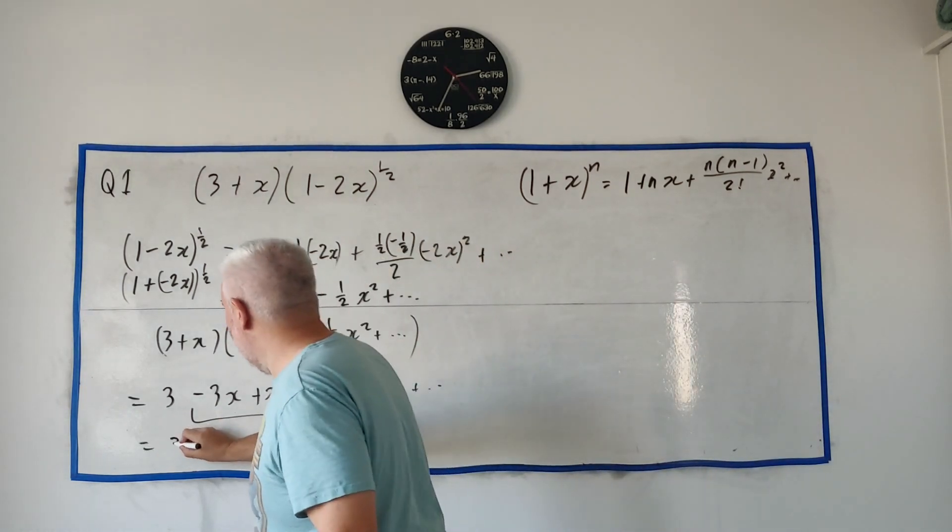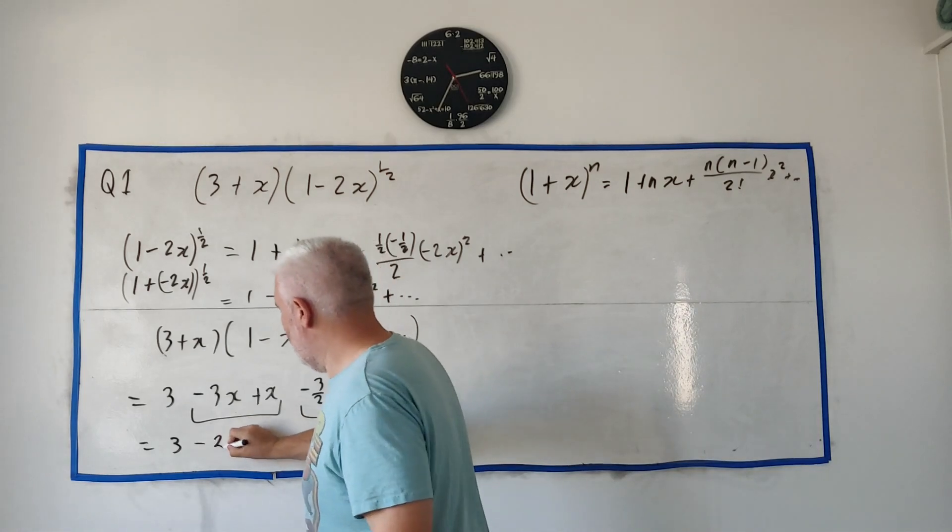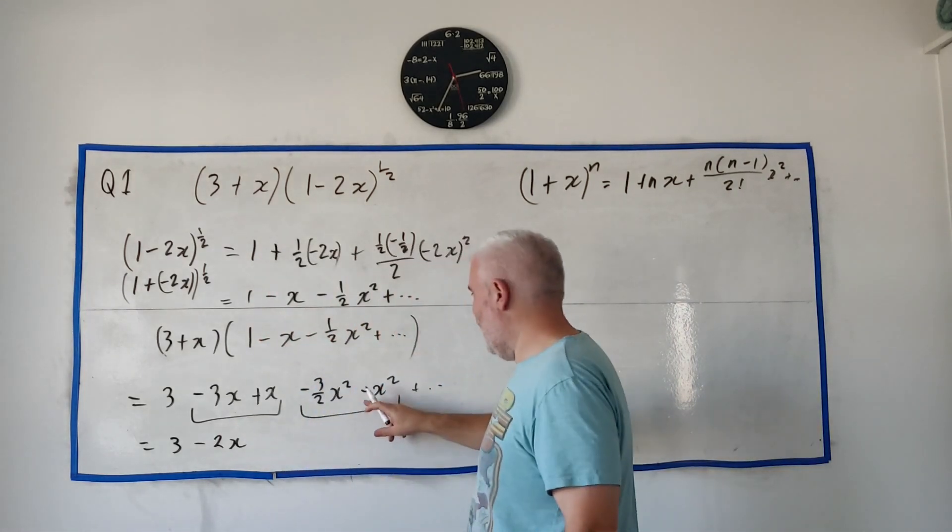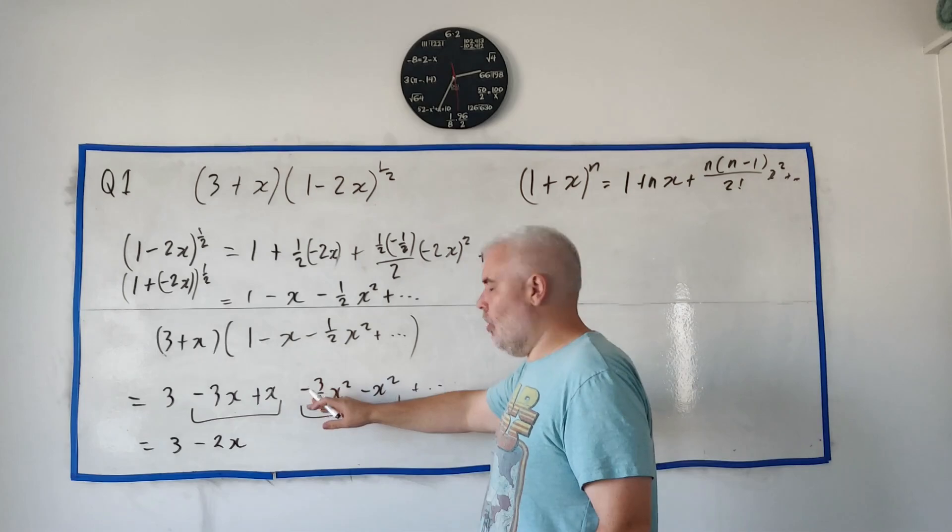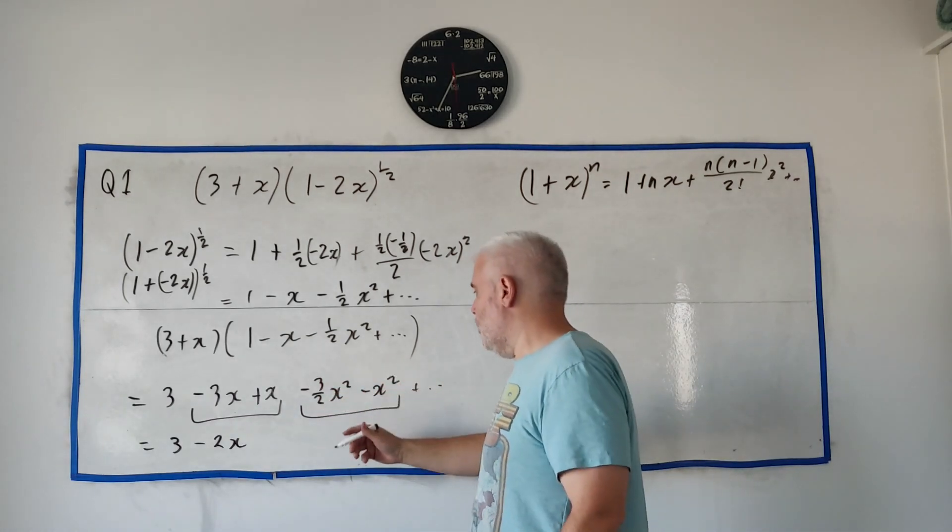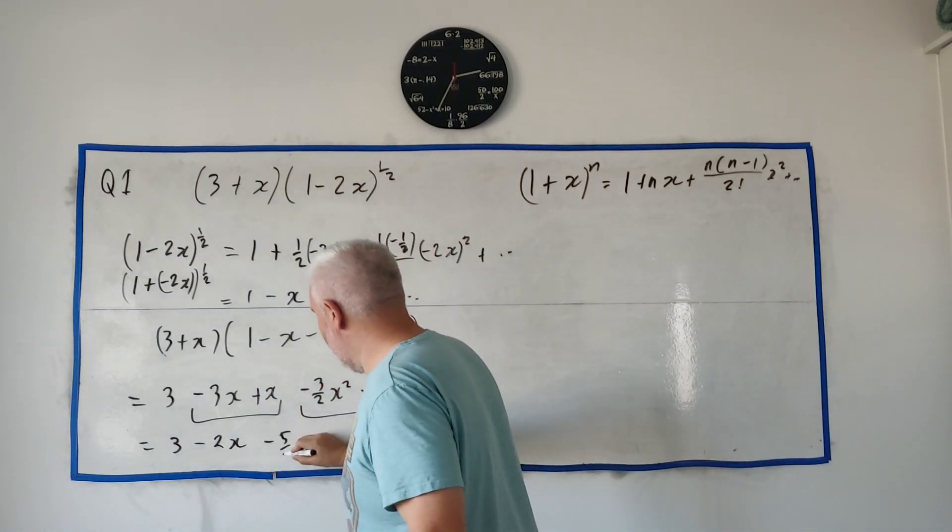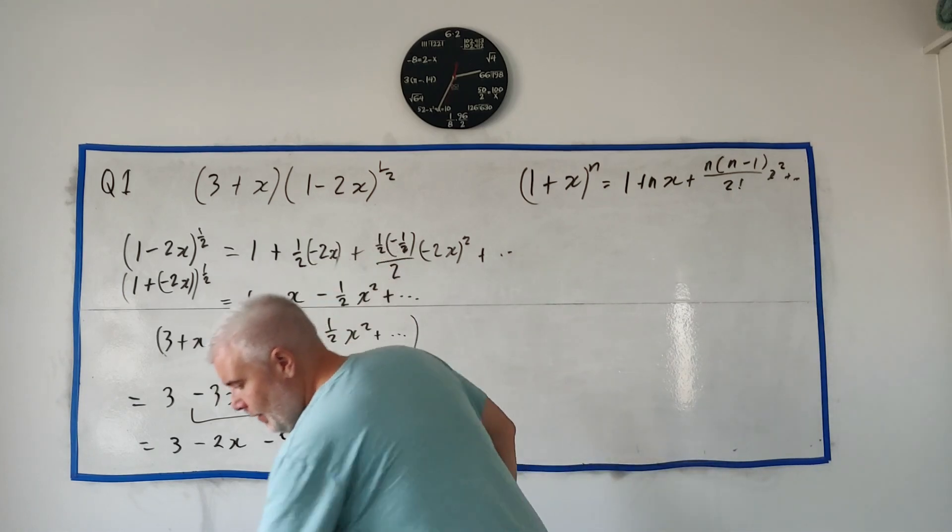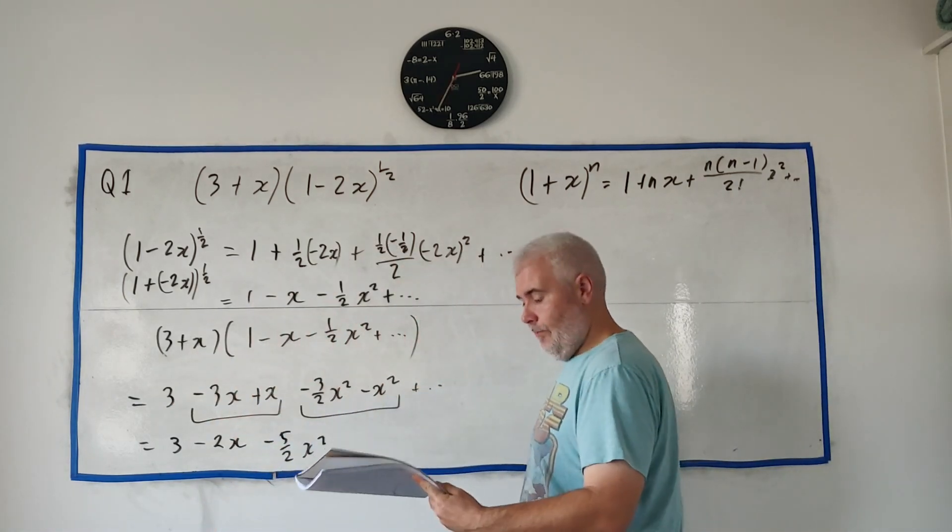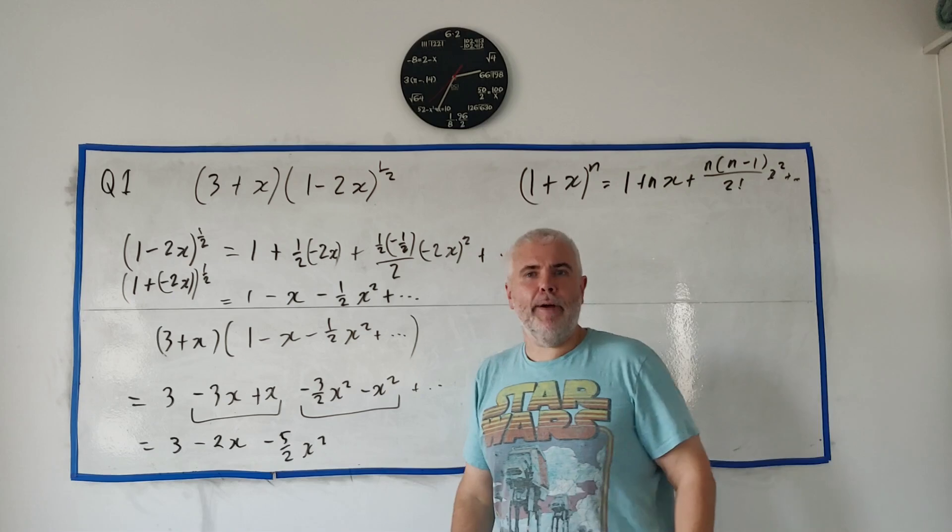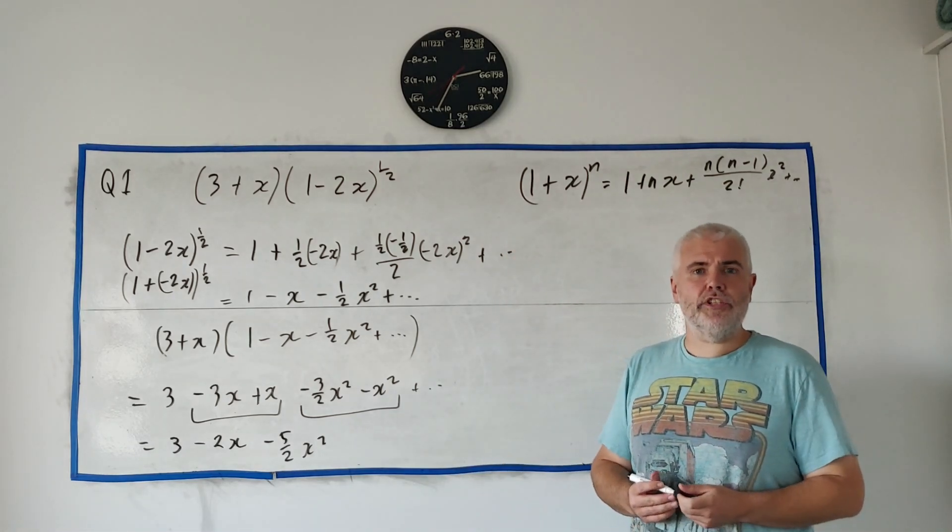Clean that up. We get 3 minus 2x. What's this? Minus 3 over 2 minus another 1. So, that's minus 5 over 2x squared. Let me just check my notes. That is right. Yeah. That's right. And, yeah. That's it. That's it for question 1.